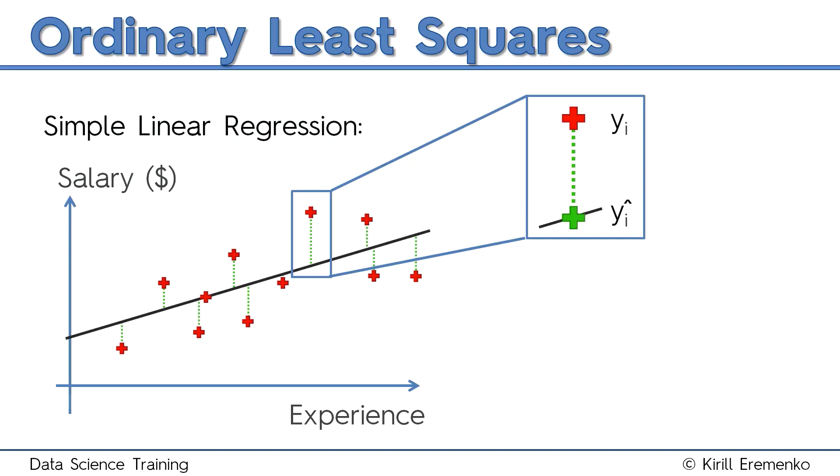So therefore, the green line will be the same regardless of what dependent variable you have, whether it's salary, whether it's grade at school, whatever. It's the difference between the observed and the modeled for that level of independent variable.